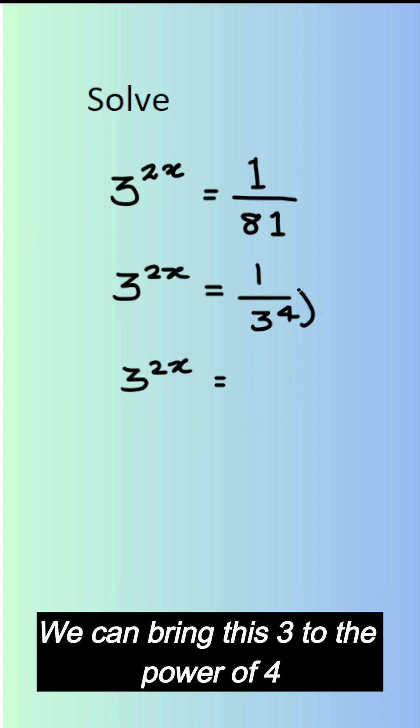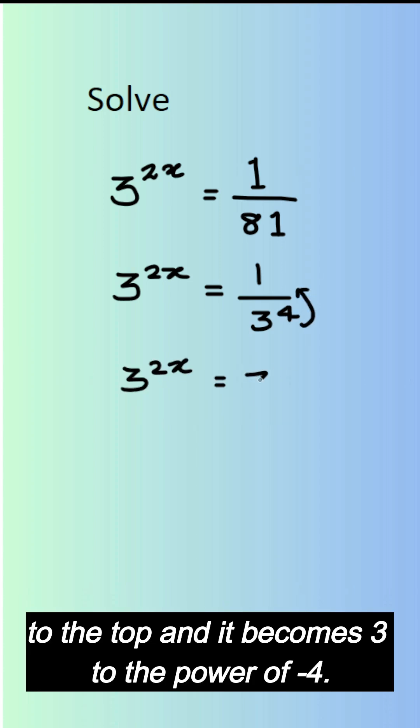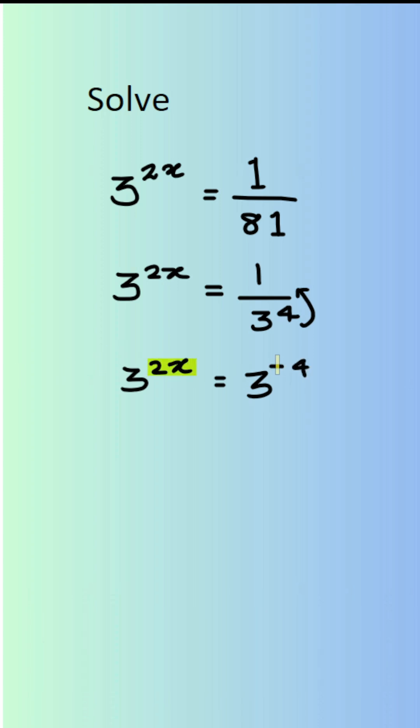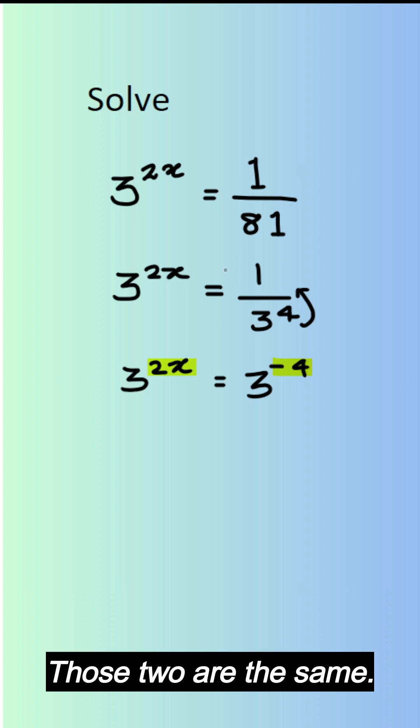We can bring this 3 to the power of 4 to the top, and it becomes 3 to the power of negative 4. And now you can clearly see this is 2x, this is negative 4. Those two are the same.